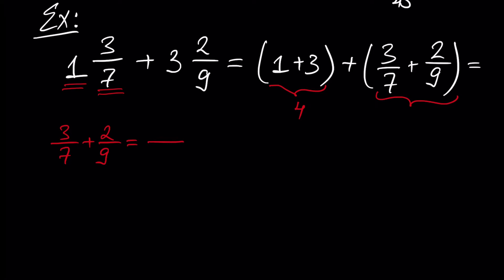The least common multiple of 7 and 9 is 63. We multiply 3 by 9 and 2 by 7. In the denominator we have the same number 63. And the numerator will be equal to 27 plus 14.